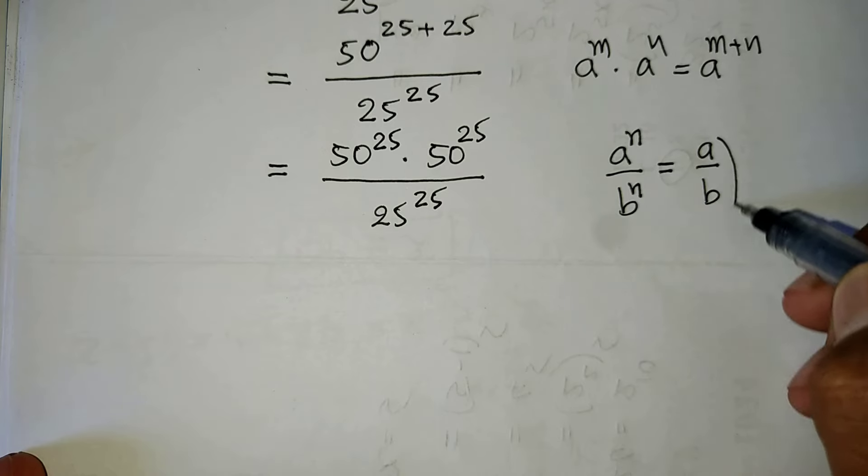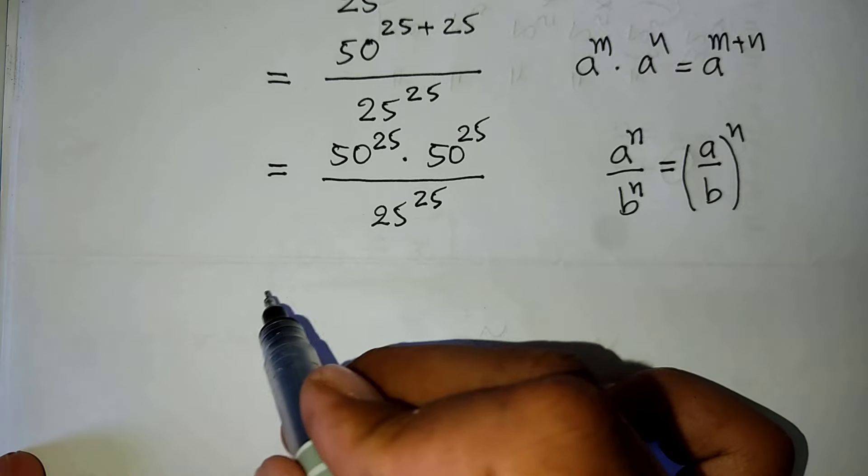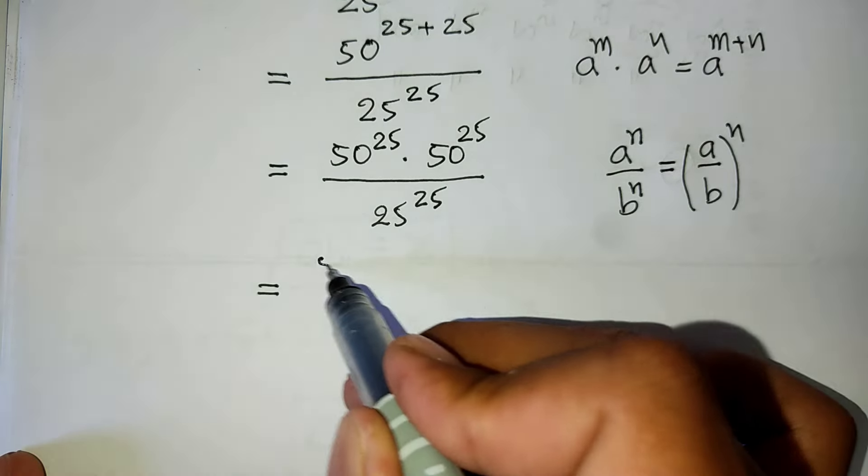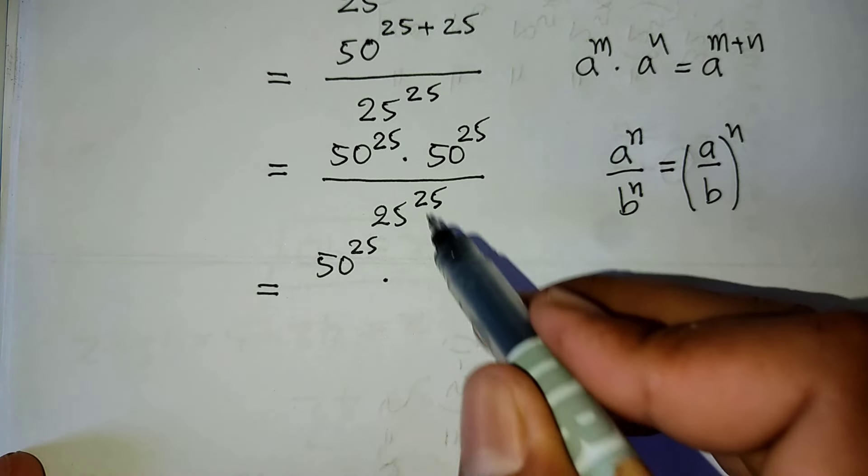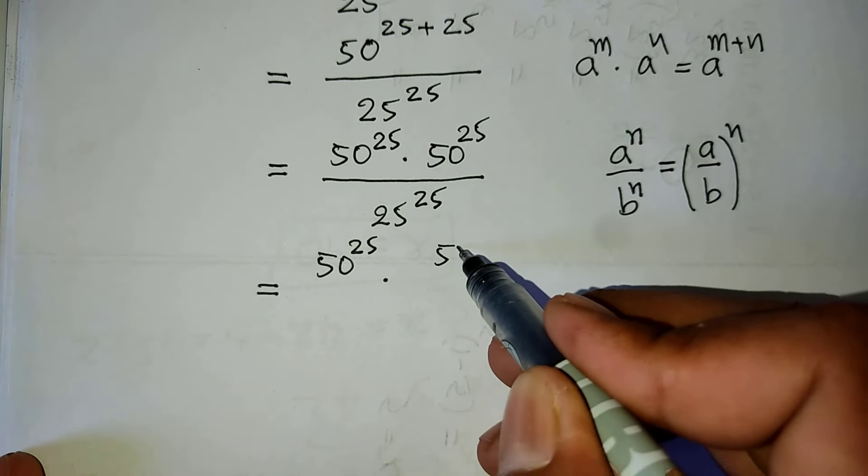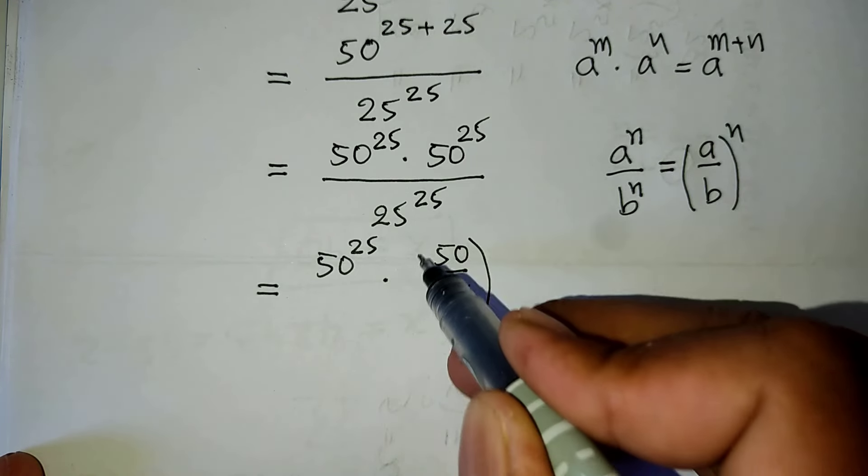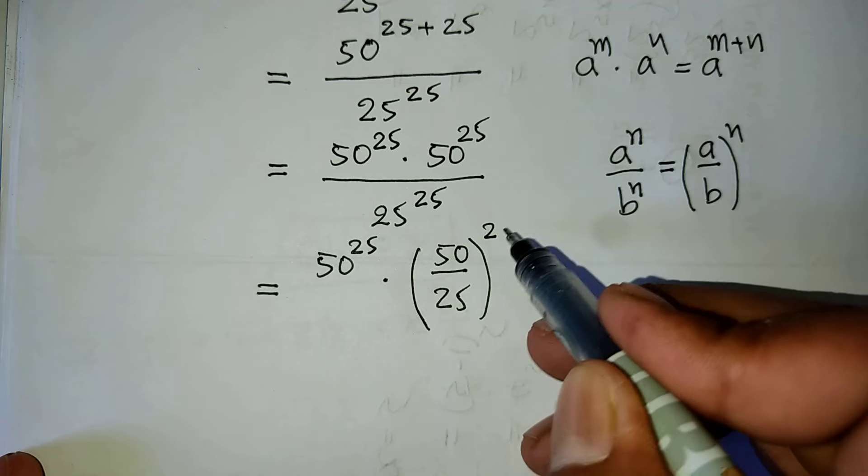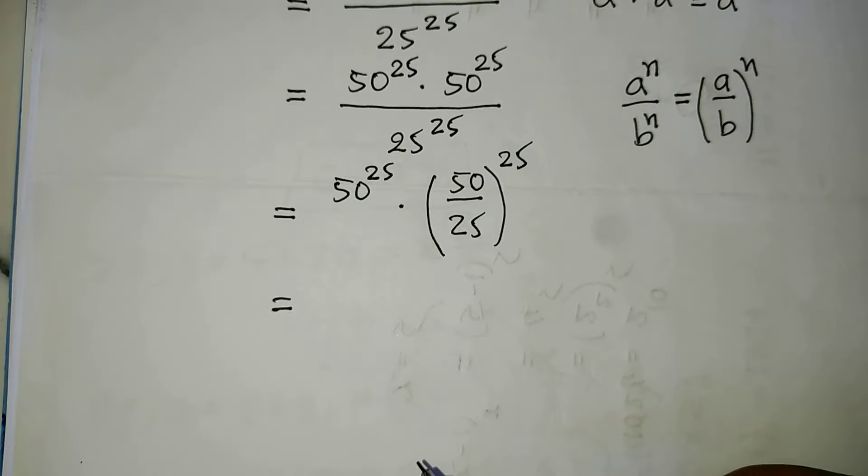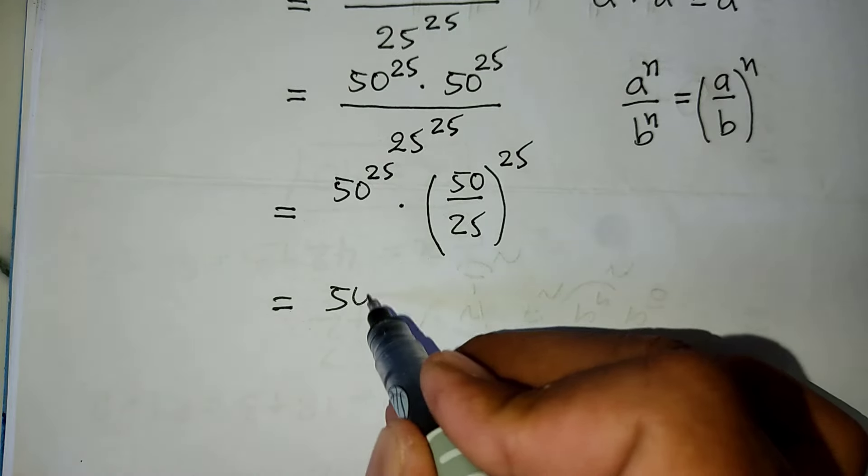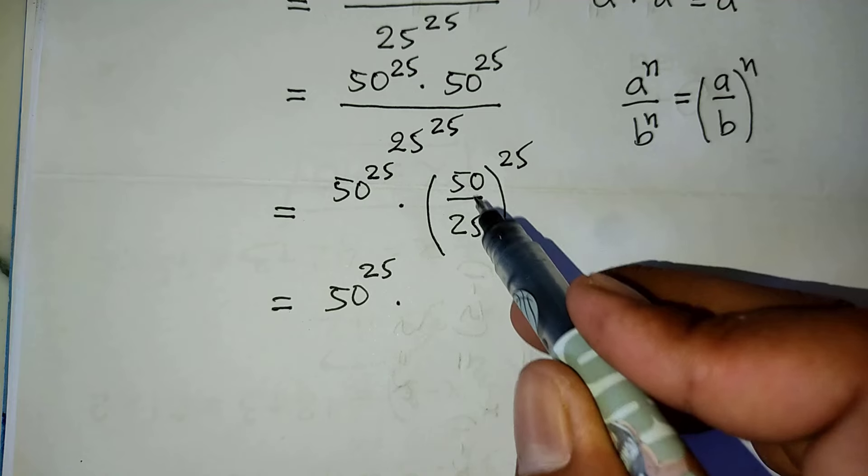So now this equals 50 to the power of 25 times, here we get 50 divided by 25 all to the power of 25. This is equal to 50 to the power of 25 times 50 divided by 25 equals 2 all to the power of 25.